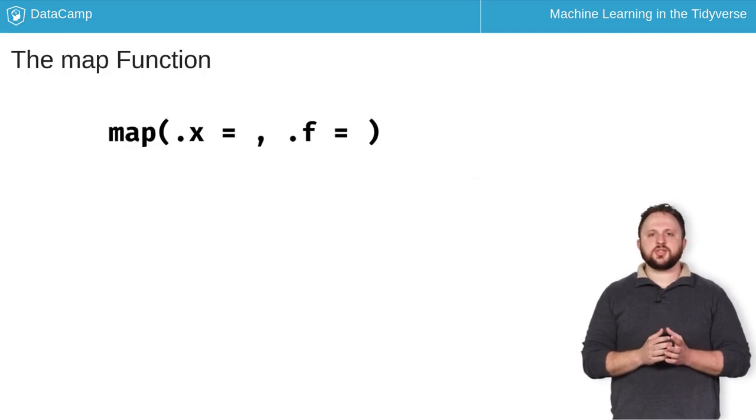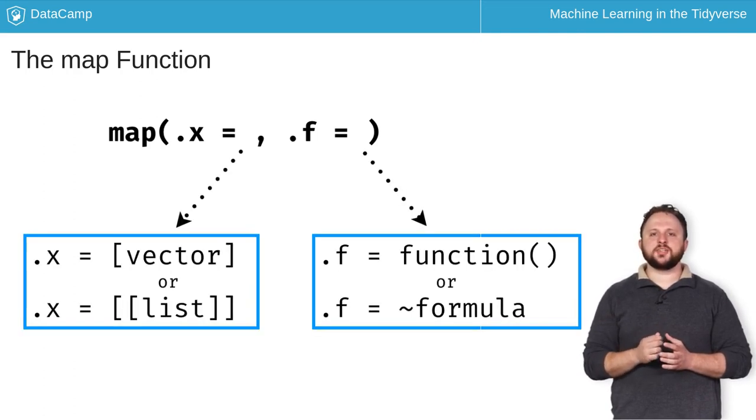The map function applies a desired function to every element in a vector or a list and always returns a list as its result. This function requires two parameters, .x and .f. .x is the vector or list that you want to iterate over, while .f is the function.